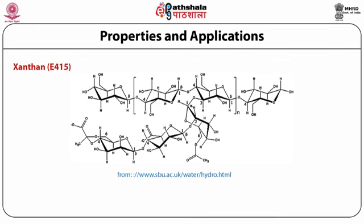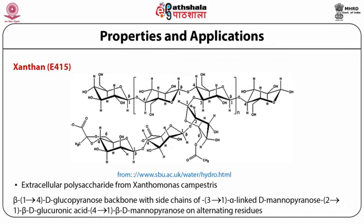Xanthan is a complex polysaccharide with a beta-1,4-D-glucopyranosyl backbone with side chains of 3-to-1 alpha-linked D-mannopyranose, 2-to-1 beta-D-glucuronic acid, and 4-to-1 beta-D-mannopyranose on alternating residues. Its properties include double helical conformations, pseudo-plastic behavior, shear thinning, and use as a thickener, stabilizer, emulsifier, foaming agent, and it forms a synergistic gel with galactomannans.